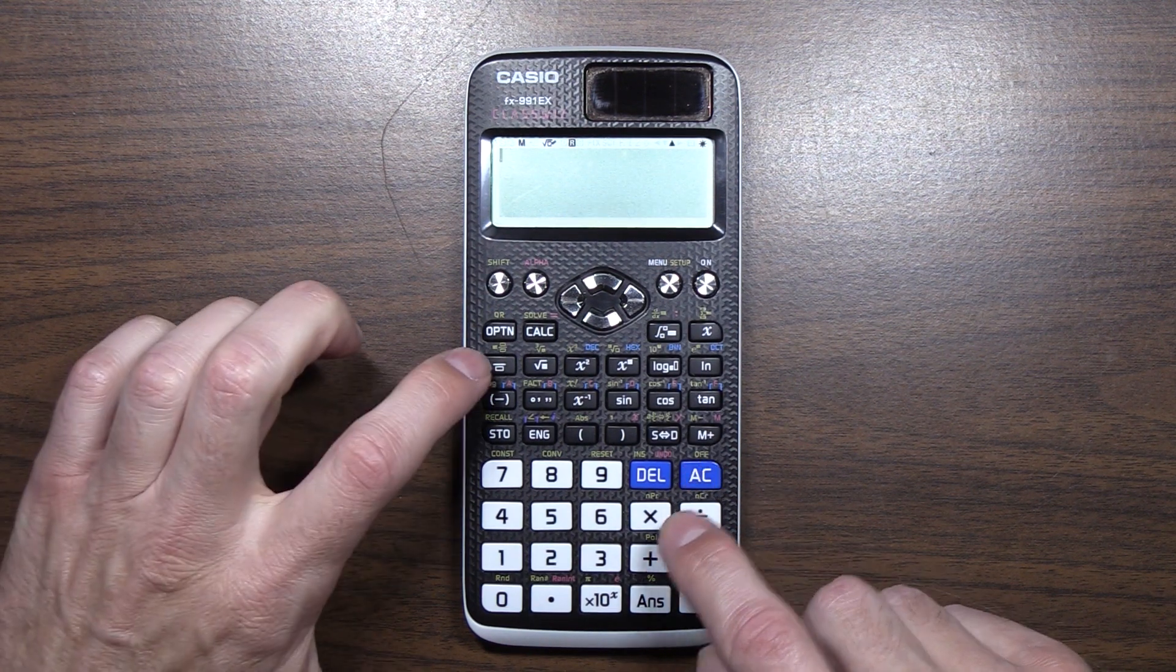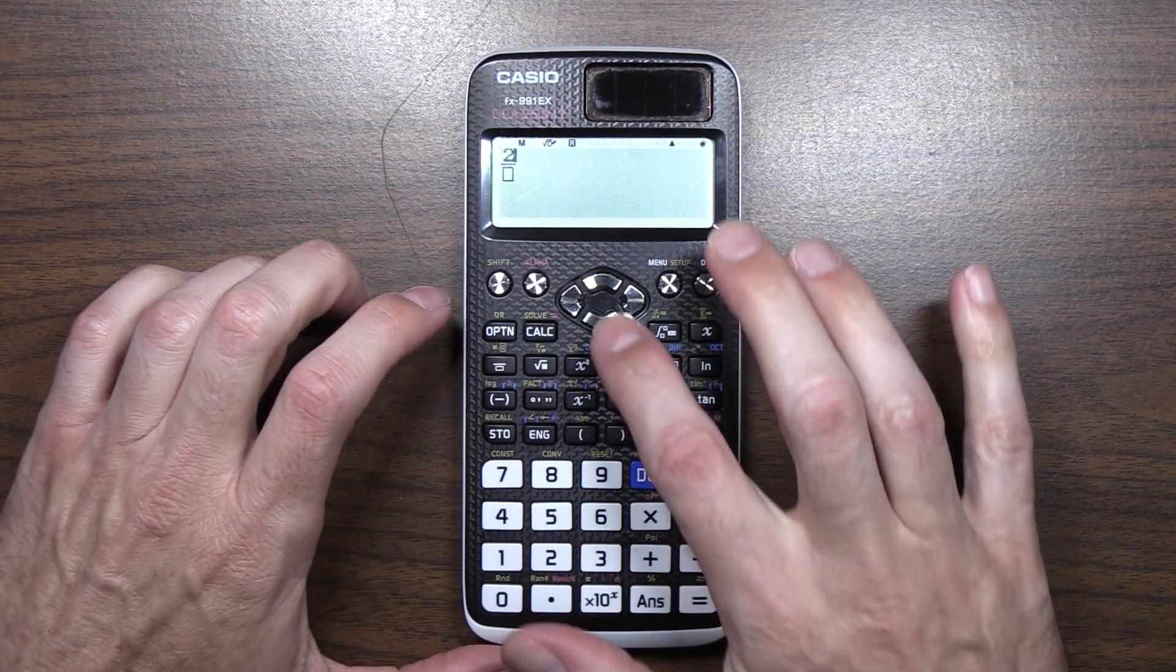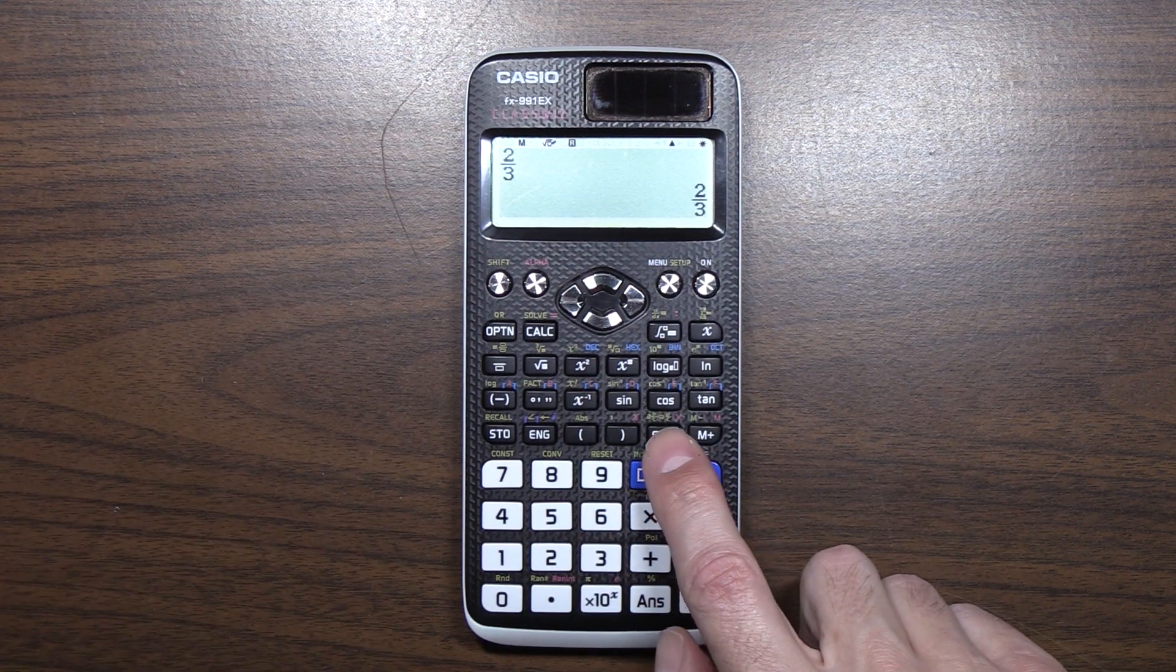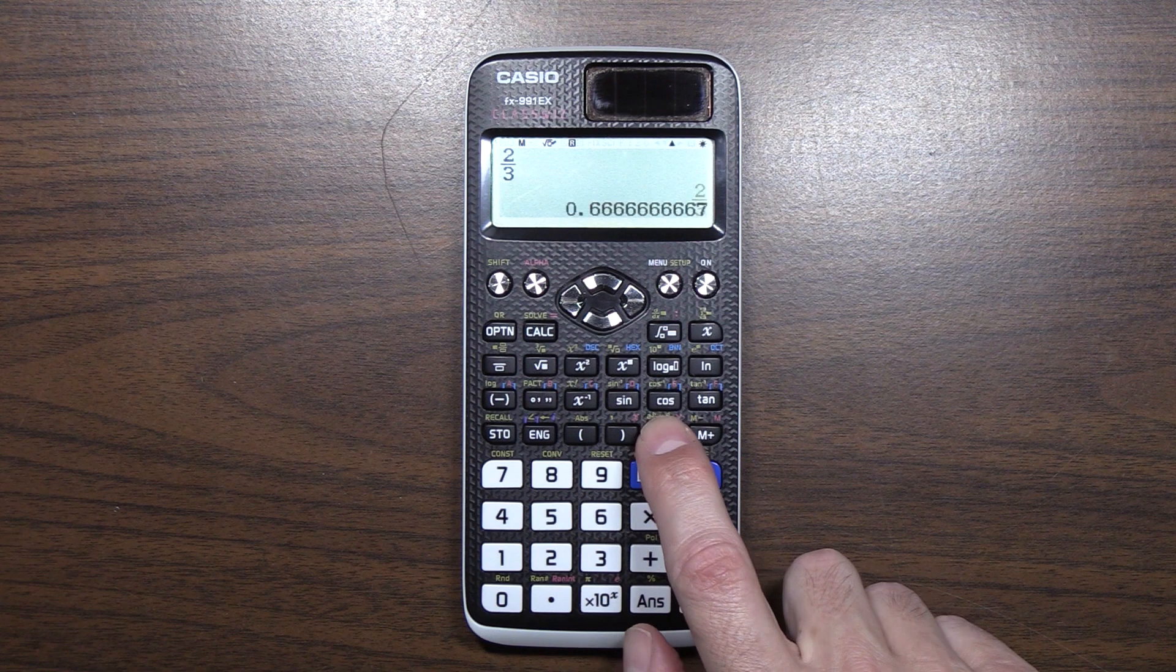I had never done that. I have always just used this key here, this SD, which I think means like symbolic to decimal, I'm not sure, but it's like a toggle.